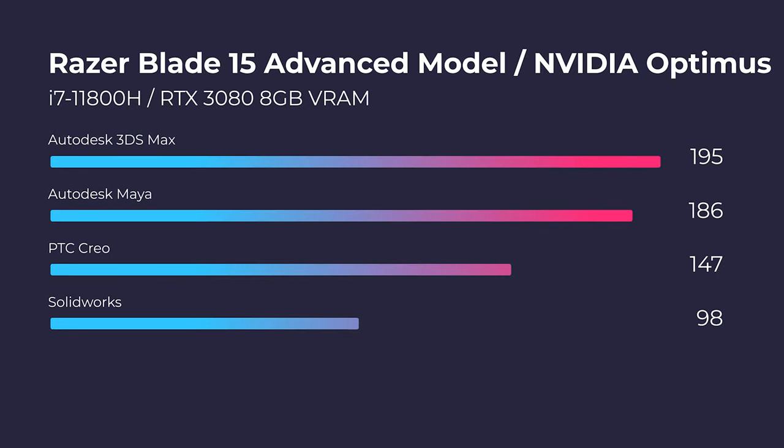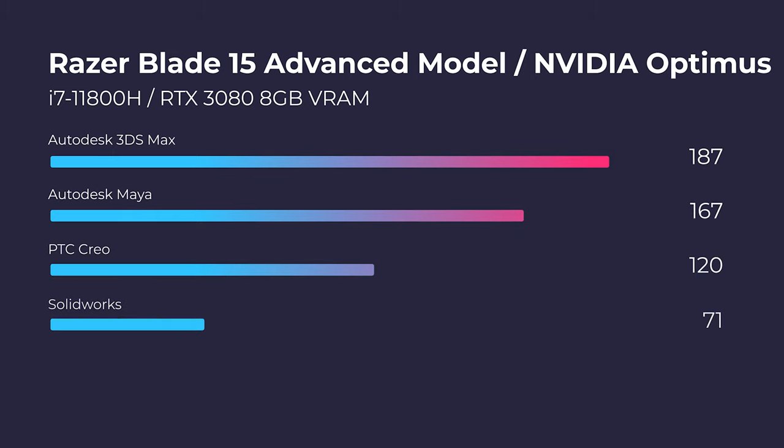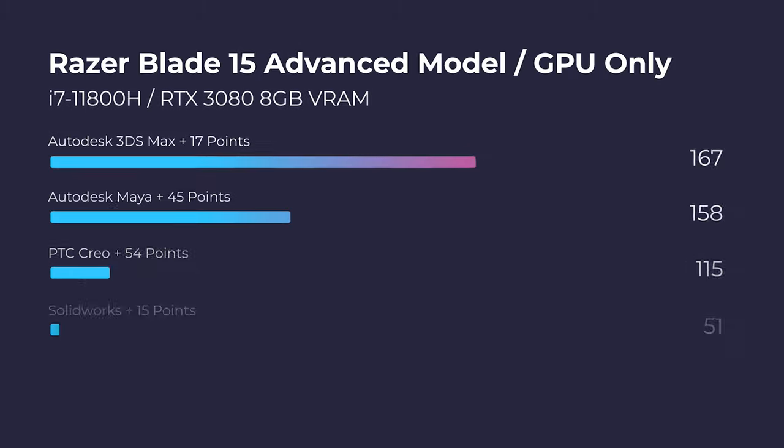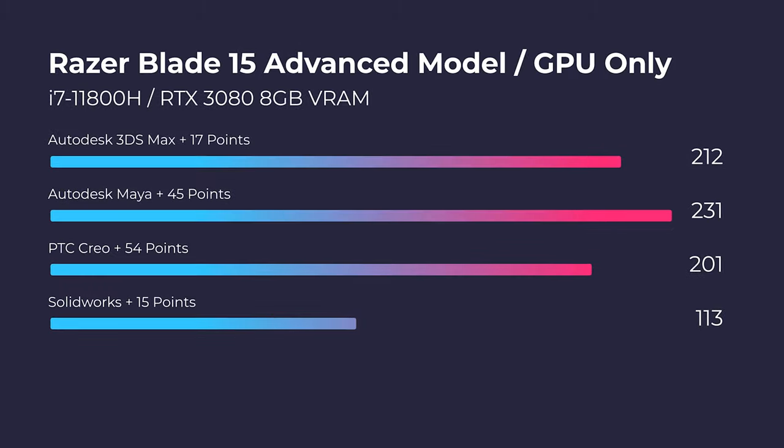As you can see on screen now, these are the standard GPU NVIDIA Optimus benchmarks. Then when I switched it to dedicated GPU only, here are the results I got — much, much better. I was very impressed that the switch in GPU mode was so helpful.